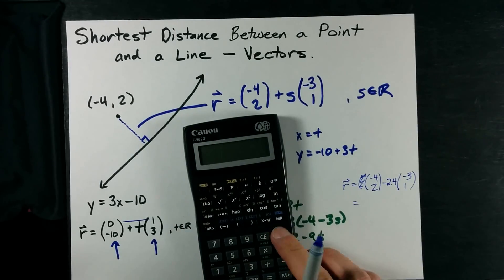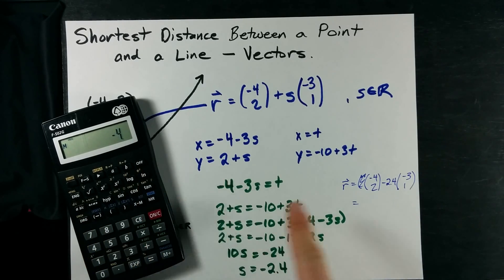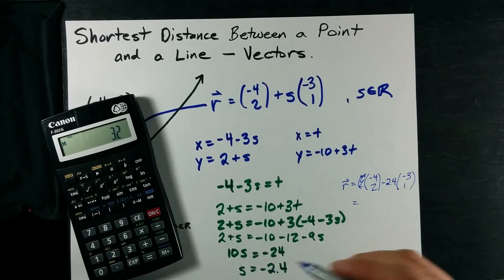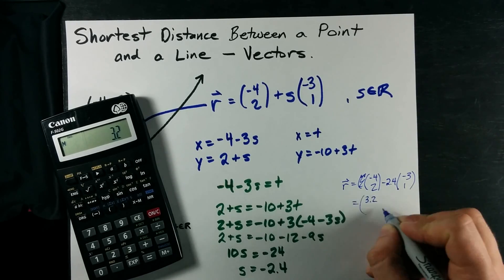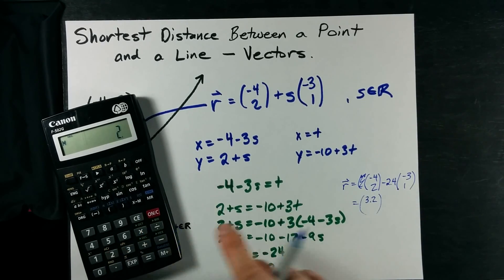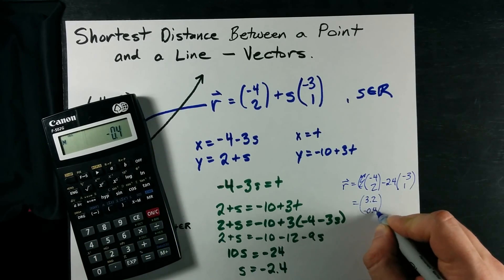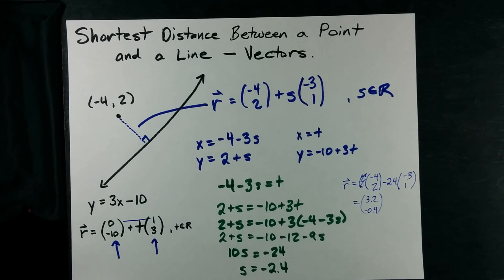I could probably do that in my head, but I just don't feel like it today. Negative 4 minus 2.4 times negative 3 gives me 3.2. And my y is 2 minus 2.4, which is negative 0.4. All of a sudden, I've got the coordinates of that point.